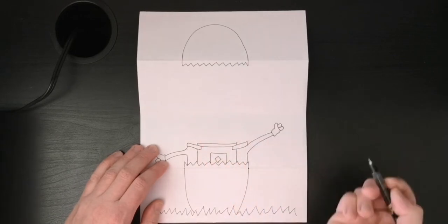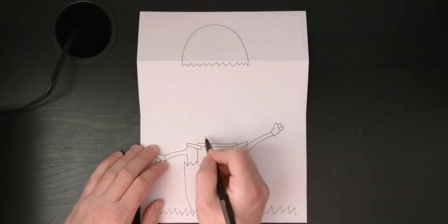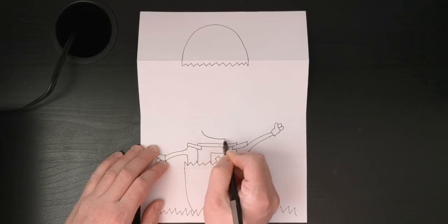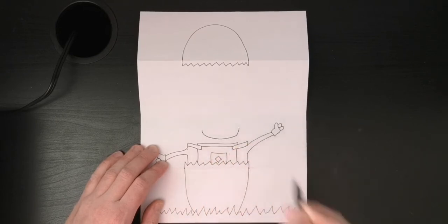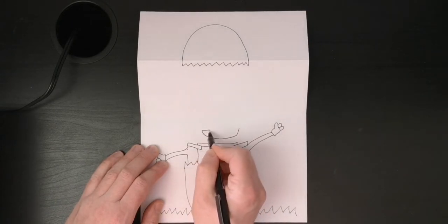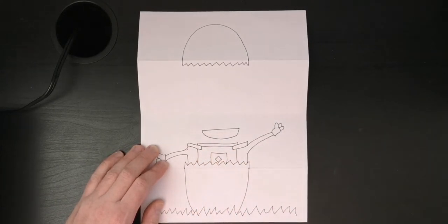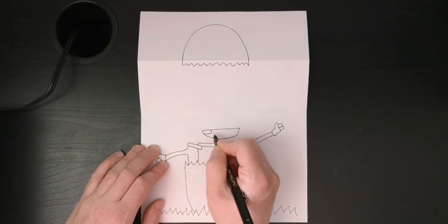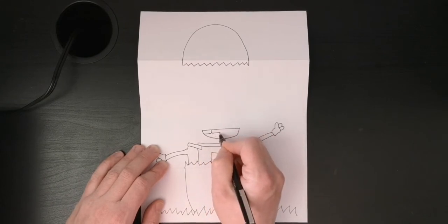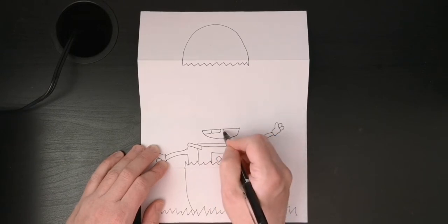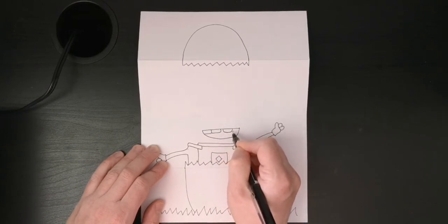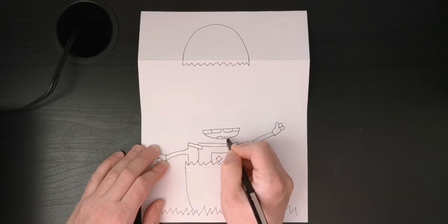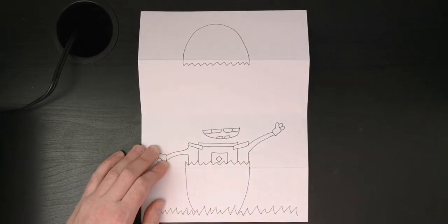So I'm going to make his mouth. I'm going to start a little bit past this line up here. Make a curve line like that. And then we're going to connect them. I think he has four teeth, so we'll try and fit four teeth in here. And then two teeth on the bottom. Awesome.